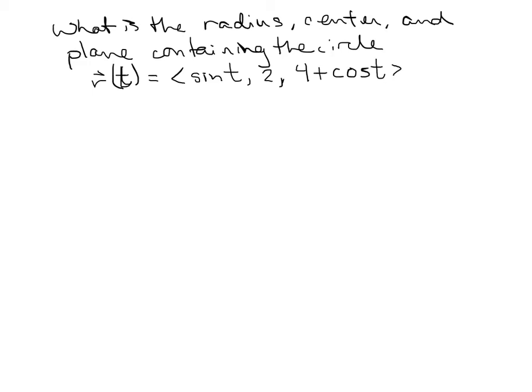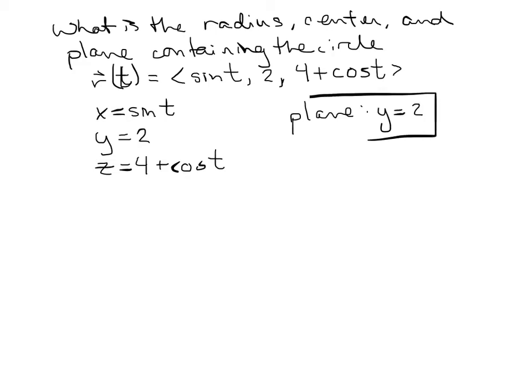The x component is sine of t, the y component is 2, and the z component is 4 plus cosine of t. I like to work in parametric equations, so I'll write this out: x equals sine of t, y equals 2, and z equals 4 plus cosine of t. The problem tells me we're talking about a circle, and I know sine and cosine describe circles in parametric equations.